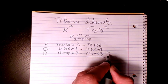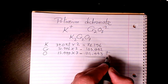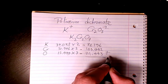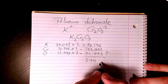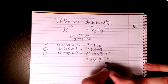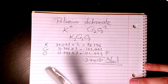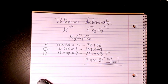Then you add them all. It's gonna be 103.992 plus 78.196. That makes it 294.181 grams per mole. So that's the molar mass or molecular weight of potassium dichromate.